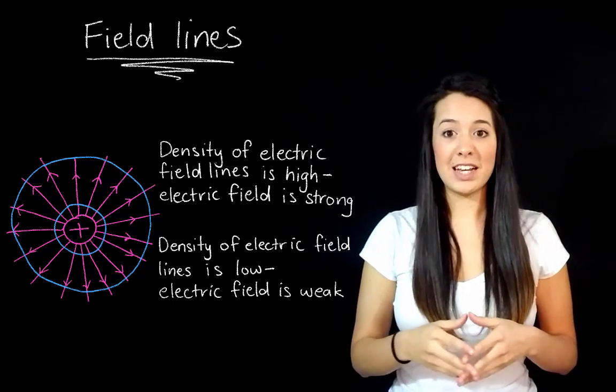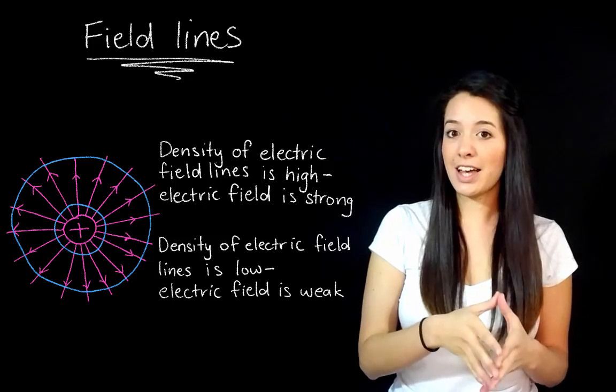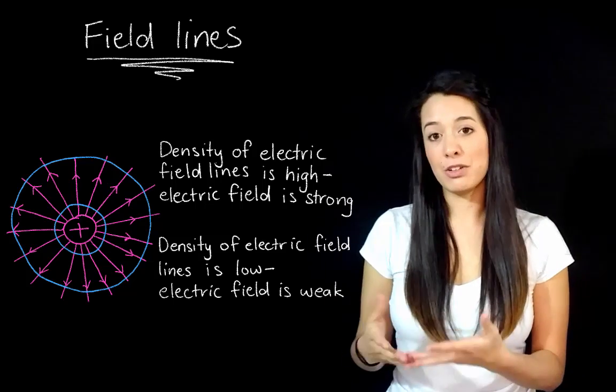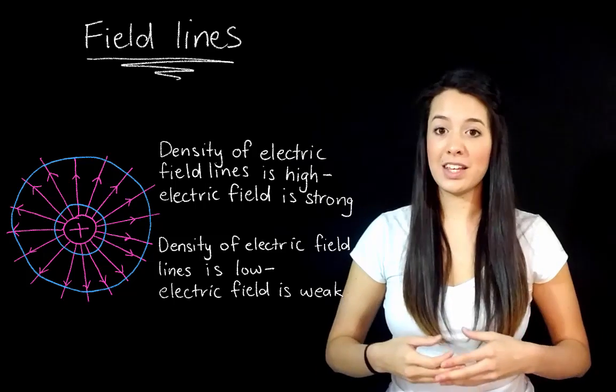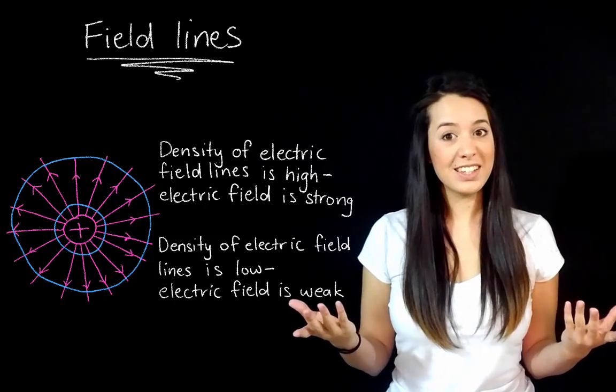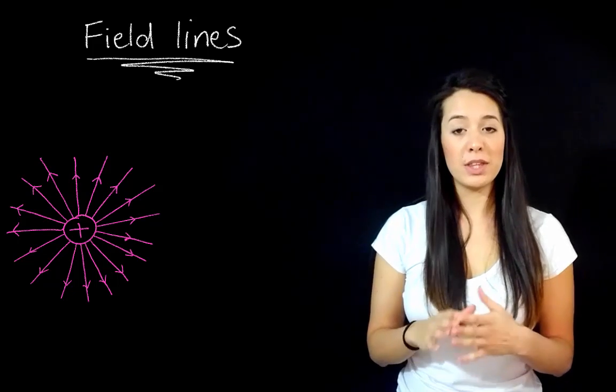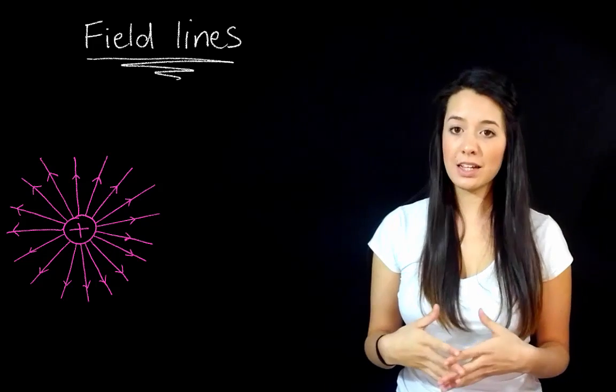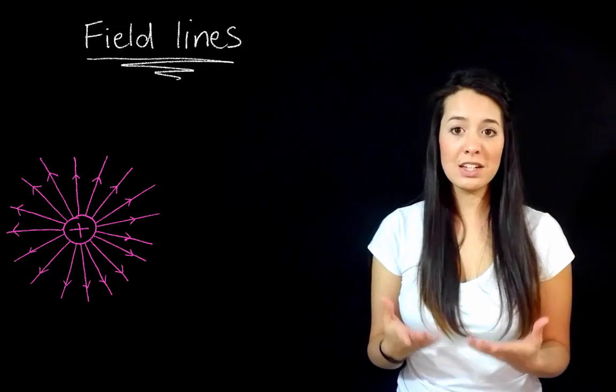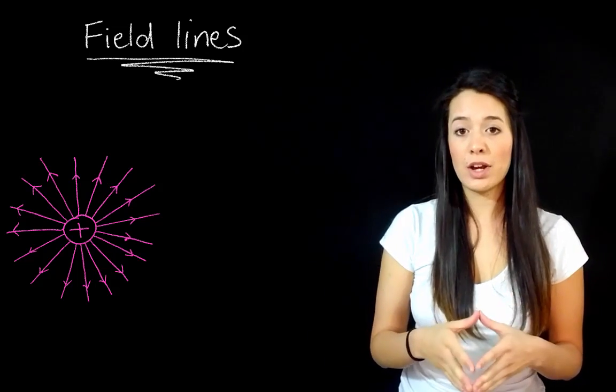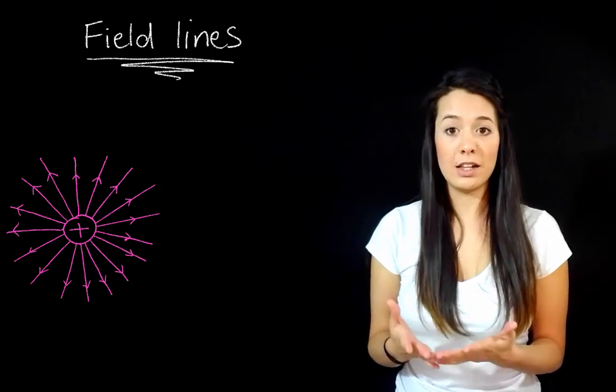So that's a really nice representation of the varying strength in electric fields. Where the density of the lines is high, that's where the electric field is strong. Where the density of the lines is low, that's where the electric field is weak. So coming back to those arrows, I mentioned that positive charges have field lines with arrows pointing out, and negative charges have field lines with arrows pointing in. And this is just convention, and it's meant to demonstrate what would happen to a positive charge if it were placed in an electric field.